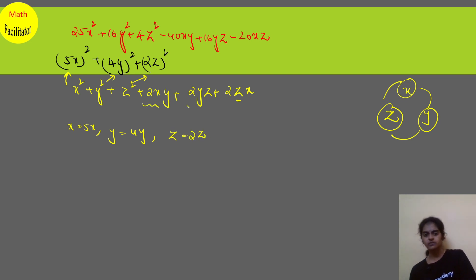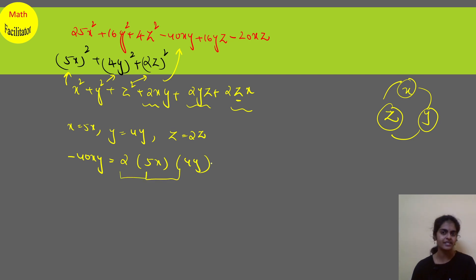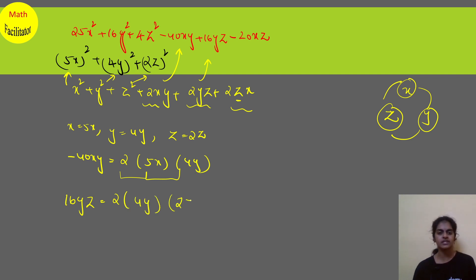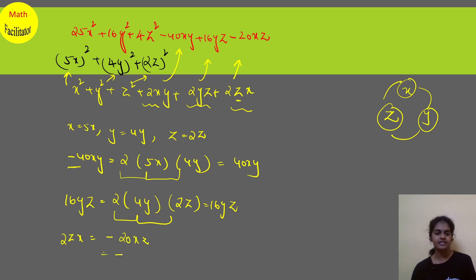Now let us compare 2xy, 2yz, and 2zx. Minus 40xy should be 2 times x and y — so 2 times 10 gives 40xy, but there is a negative sign. Next, 16yz is nothing but 2 times 4y and 2z, giving 16yz. And minus 20xz is 2 times x and z — 2 times 5 times 2 gives 20, and you have a minus sign.